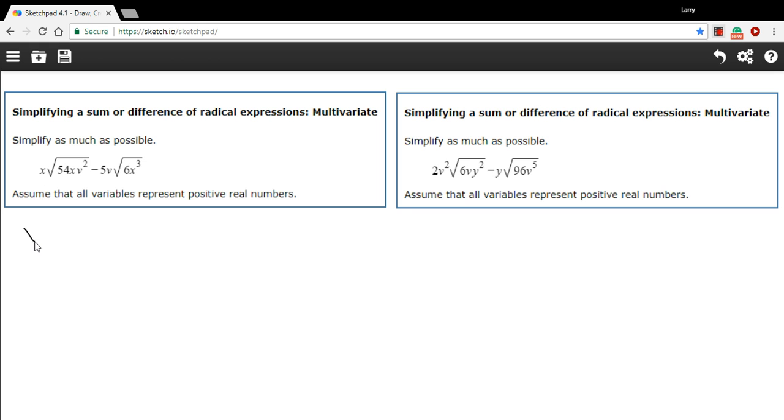So let's see what we can do here. Our first term, let's just take this a term at a time. We've got x times the square root of 54 times x times v squared. Well, this number, I don't think I can take the square root of 54 as a whole number, so let's go ahead and factor that first. So I'm going to factor that as 9 times 6, that's 54, and then we have x and we have v squared.